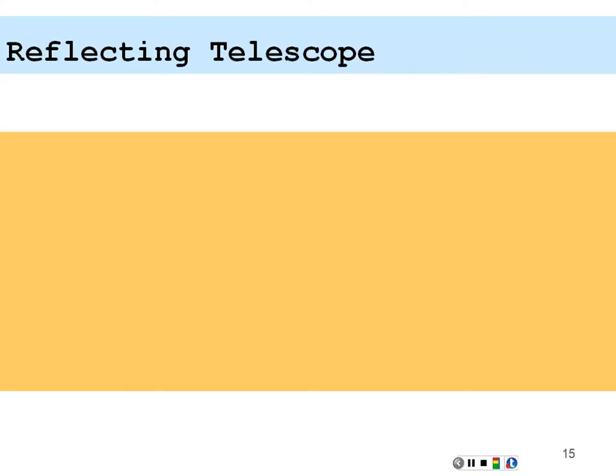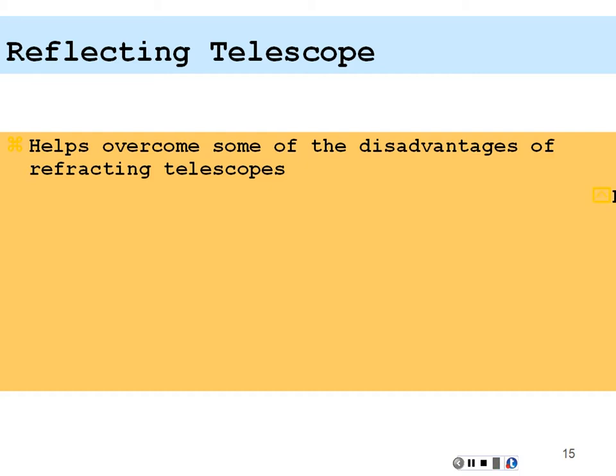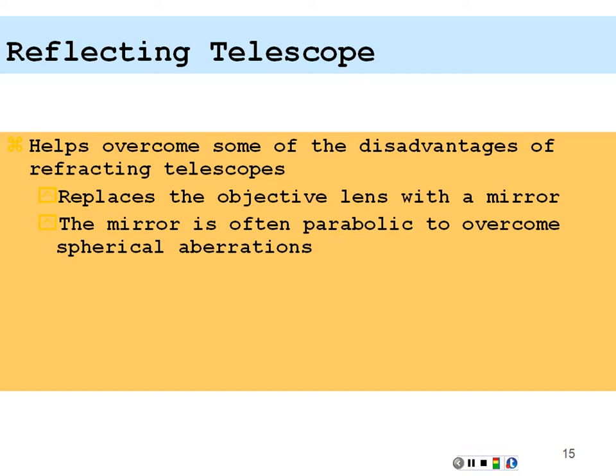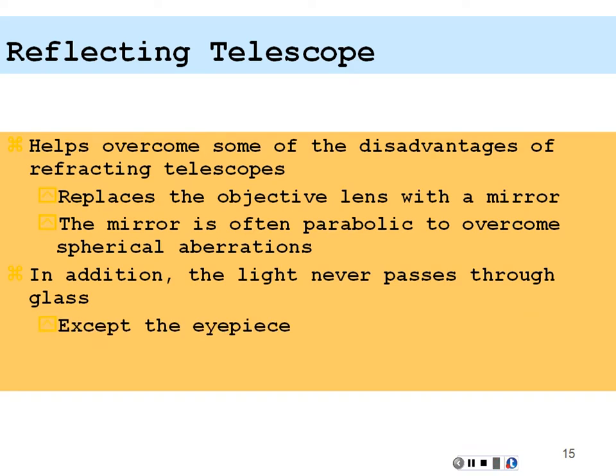So the reflecting telescope devised by Newton is actually better. It replaces the objective lens with a mirror so you don't have to worry about the aberrations due to the objective lens. The mirror is often parabolic to overcome spherical aberrations. And additionally light never passes through the glass so you don't have chromatic aberrations. And you only have to worry about the eyepiece. So chromatic aberrations are reduced to just what is given to you by the eyepiece lens itself. Also, the mirror can be much better supported against gravity and there's no sagging due to gravity because the mirror is just a surface.